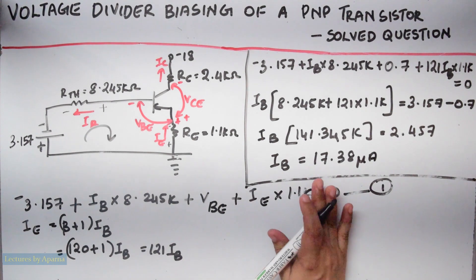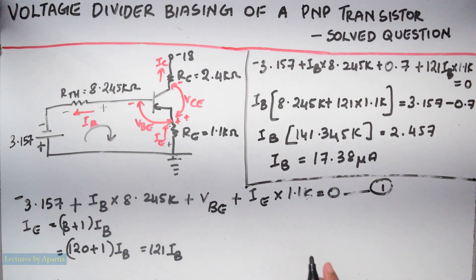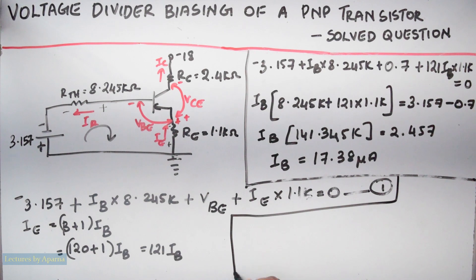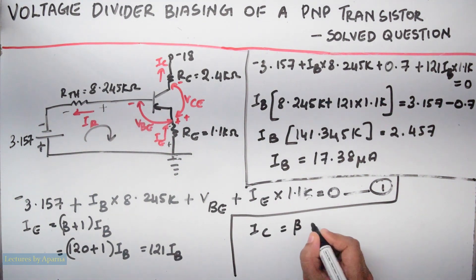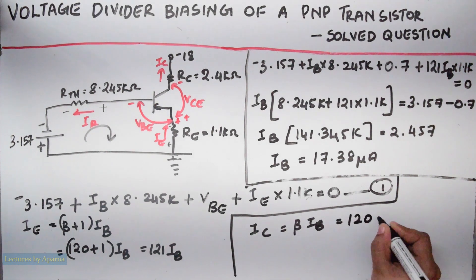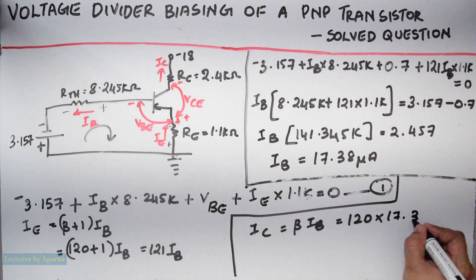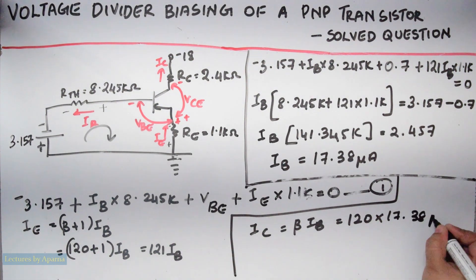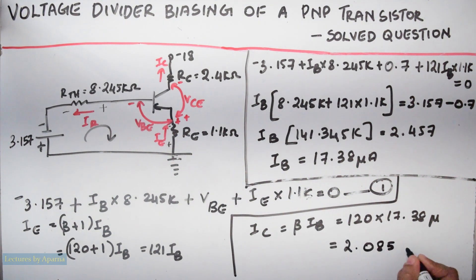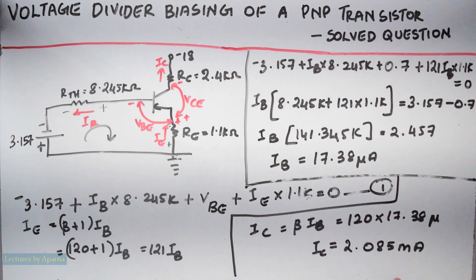Now I have to find IC. IC equals beta times IB. Beta is 120, so IC equals 120 times 17.38 microamperes, which gives IC equal to 2.085 milliamperes. So I have found IC.